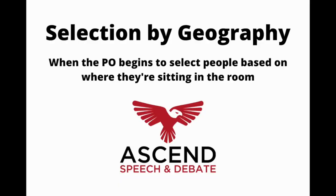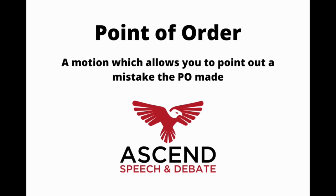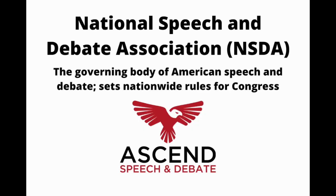If a PO deviates wildly from the standard gaveling procedure, you should make a point of inquiry — a motion which gives you permission to ask the PO a question — and ask them to bring their gaveling procedure closer to the expected standard. The PO should also let you know they'll start by picking speakers and questioners completely randomly. This doesn't mean you'll randomly get a speech you don't want — it just means the PO selects from among people who stand for a speech randomly, so no one is given priority due to favoritism. If the PO intends to use any other selection method, such as geography or first-standing, you should make a point of order, pointing out that random selection is the only method allowed by the National Speech and Debate Association (NSDA).